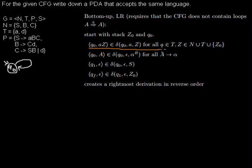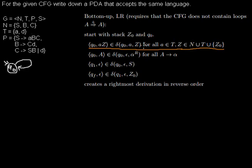The first line says we want a transition from q0 to q0. We want to read any terminal from the input string — in this example, for 'a' and for 'd'. We want to read any symbol from the stack, and push that terminal and the symbol back onto the stack. The symbol we read from the stack can be a non-terminal, a terminal, or the bottom symbol — our new bottom symbol.